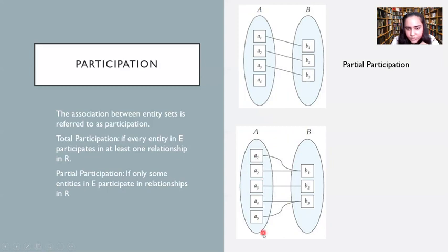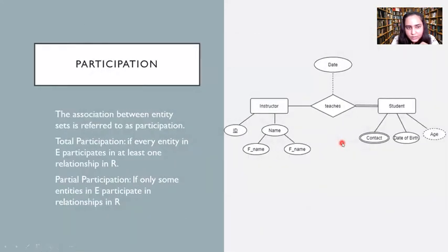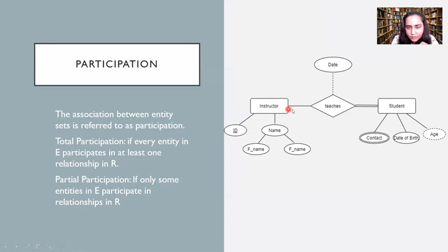In the second diagram, all entities of A are connected with some entity of B, and all entities of B are connected with some entity of A — giving total participation of both A and B. In the ER diagram shown, a single solid line represents partial participation and a double solid line represents total participation. The student entity set totally participates in the teacher's relationship, while the instructor entity set only partially participates.